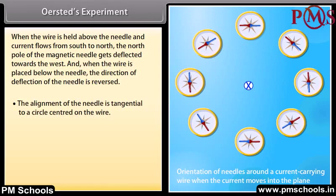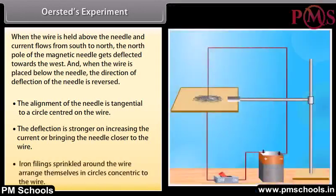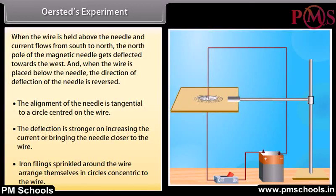The alignment of the needle is tangential to a circle centered on the wire. The deflection is stronger on increasing the current or bringing the needle closer to the wire. Iron filings sprinkled around the wire arrange themselves in circles concentric to the wire.